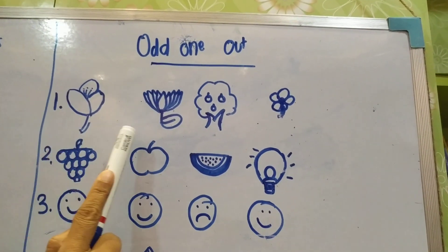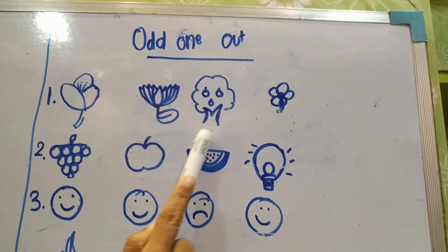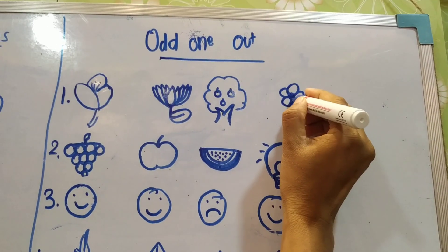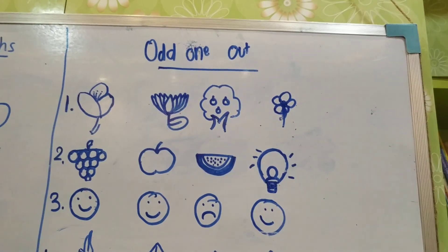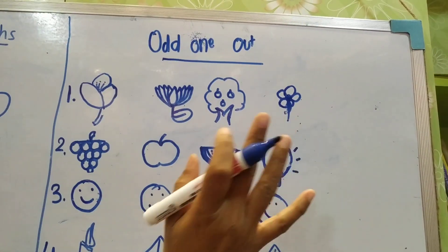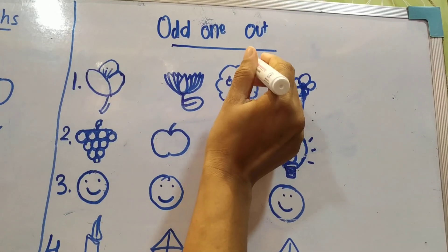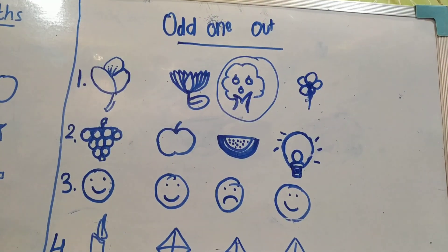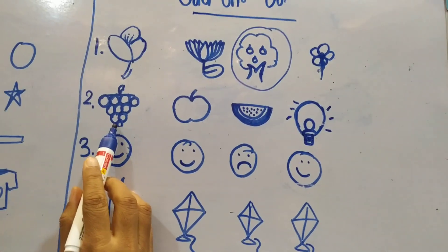This is the picture of a flower, flower, tree and one more flower. So which one do you think is not suitable or not fit to be in this set? It is the tree. So we will circle this tree.